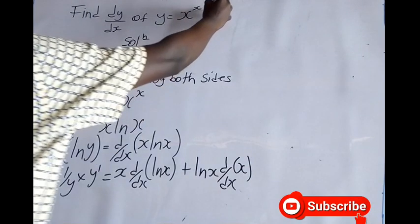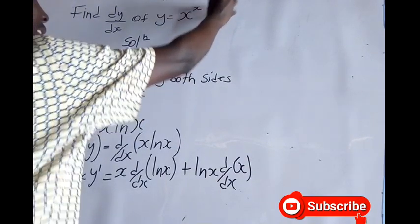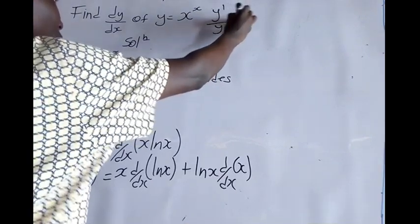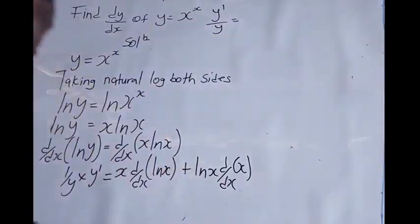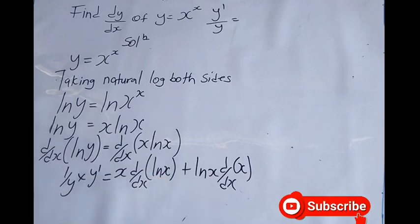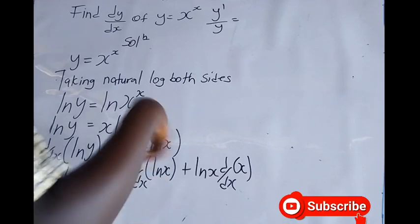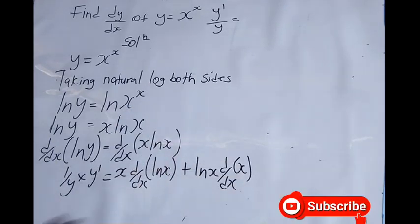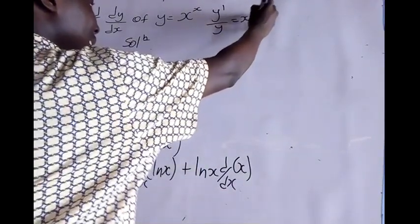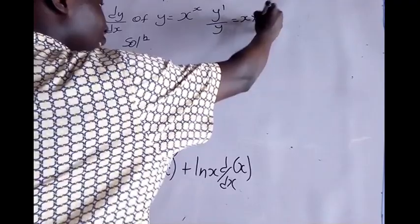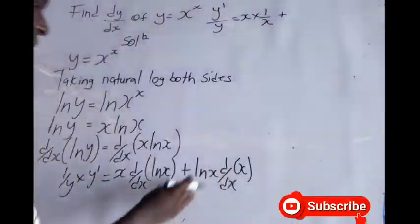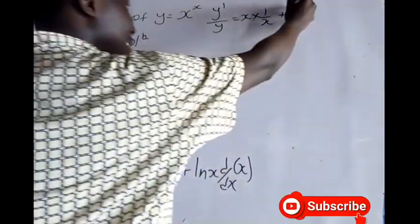So we get dy/dx over y equals: the derivative of ln(x) is 1 over x, so we get x times 1 over x plus ln(x), which simplifies to 1 plus ln(x).